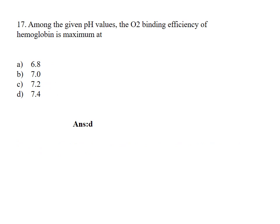Amongst the given pH values, the oxygen binding efficiency of hemoglobin is maximum at: Option A, 6.8; B, 7; C, 7.2; D, 7.4. Answer Option D, 7.4.